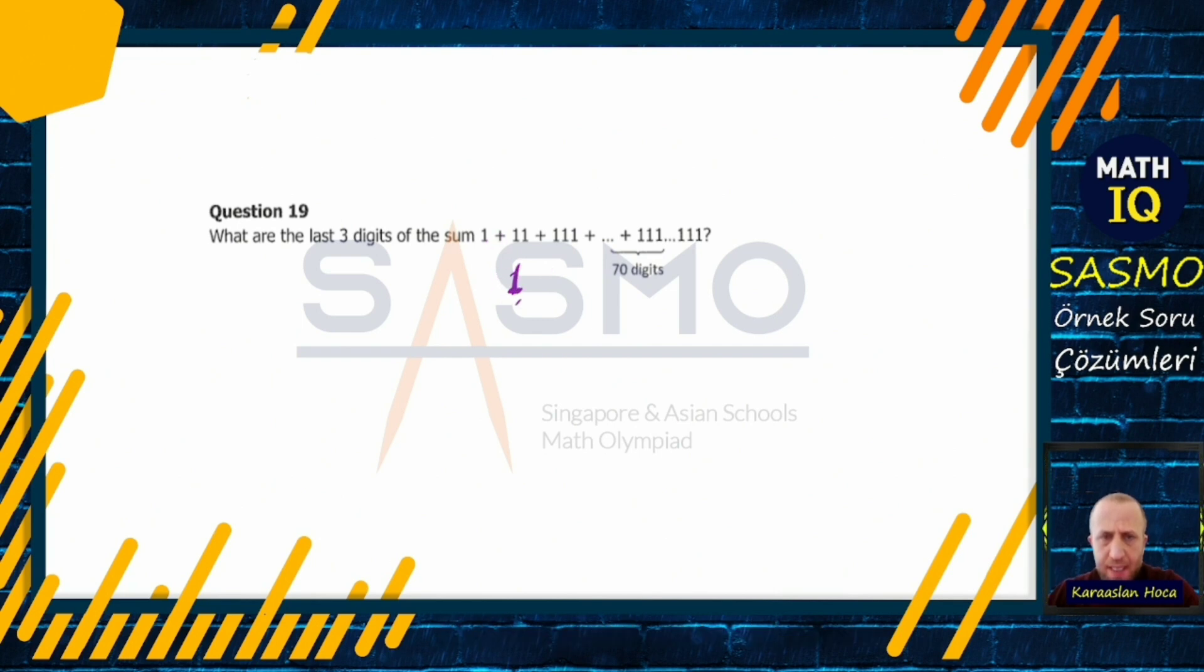First one we wrote 1. The second is 11. The third is 111. At the end, the fourth is 1111. If I collect it upside down, we can catch the event better. This is how it continues. 1111, be careful like this guys, 70 digits.